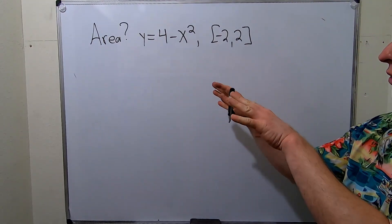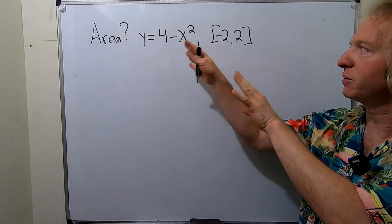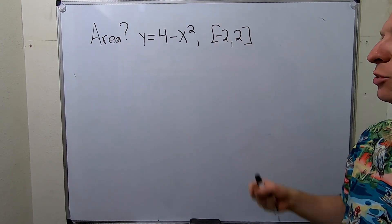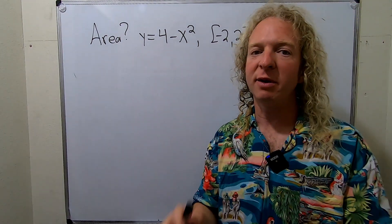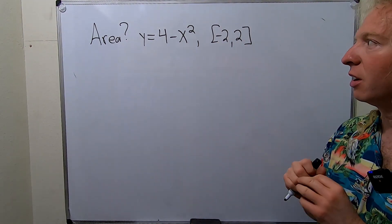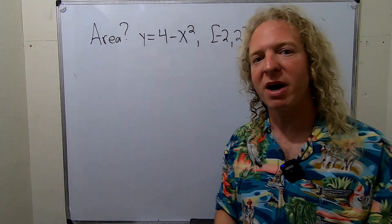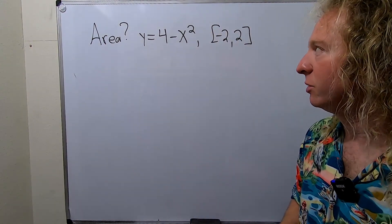In this video we're going to find the area under the graph of this function from negative 2 to 2 using the limit process. So this is a long process but it's not too bad if you just go slow and take your time.